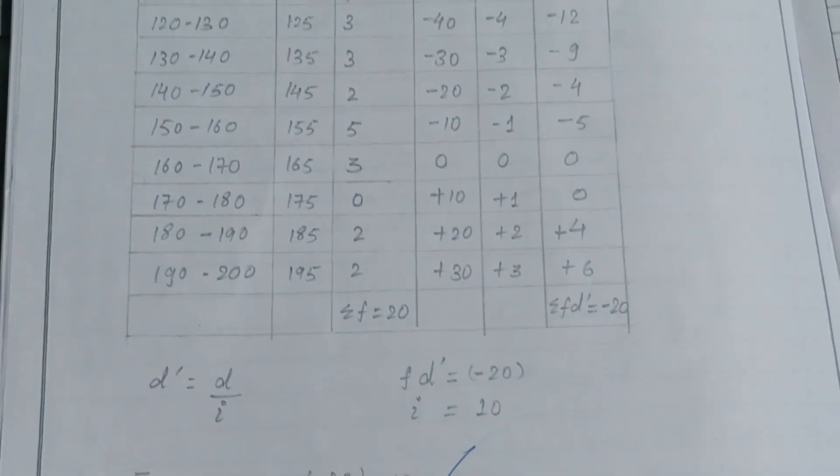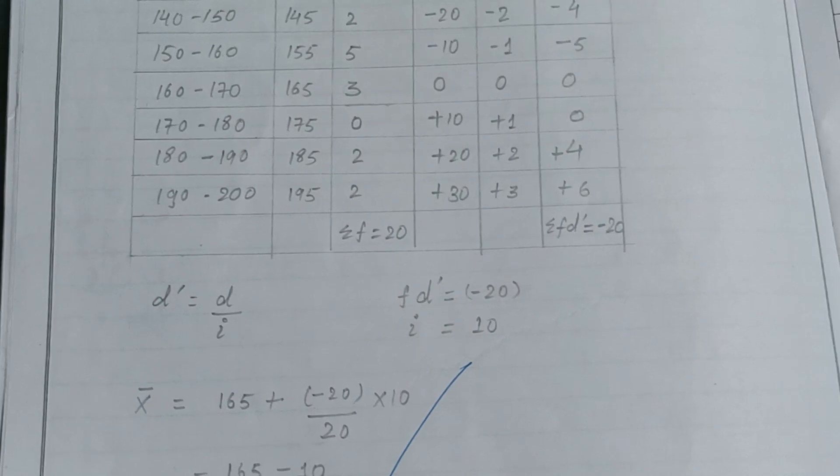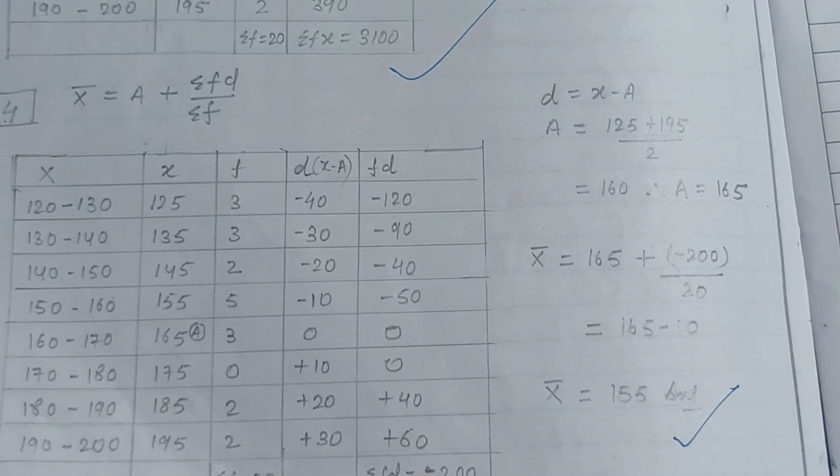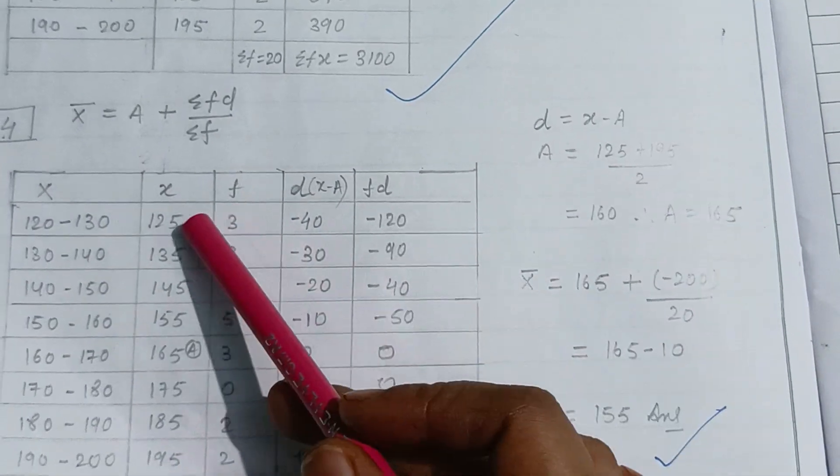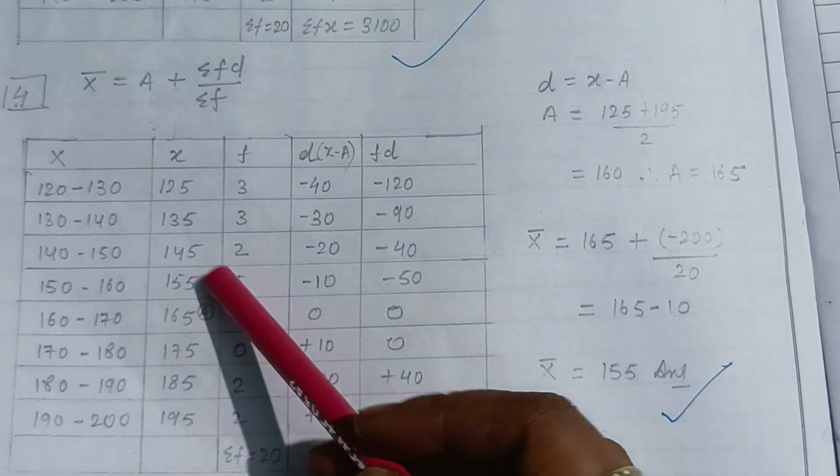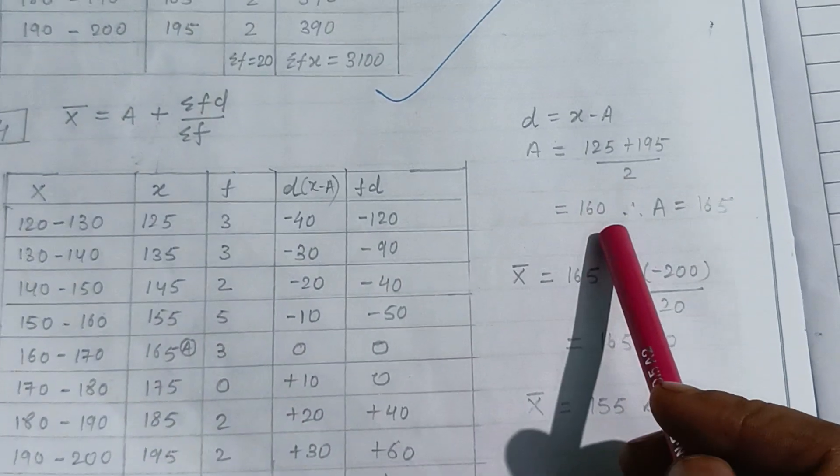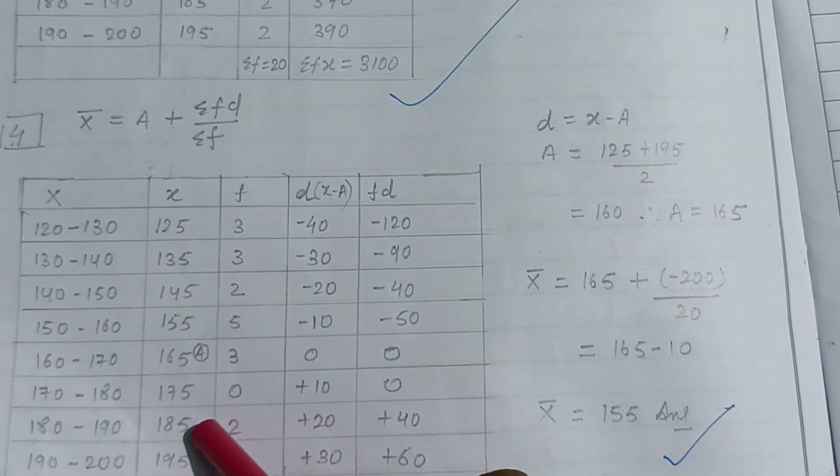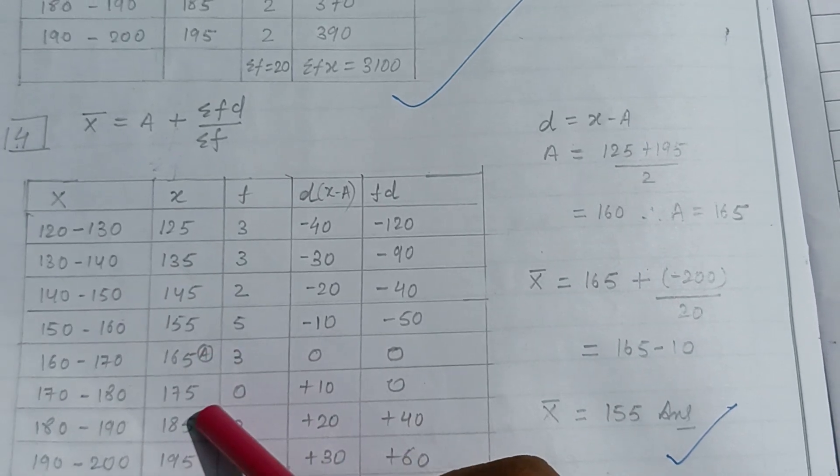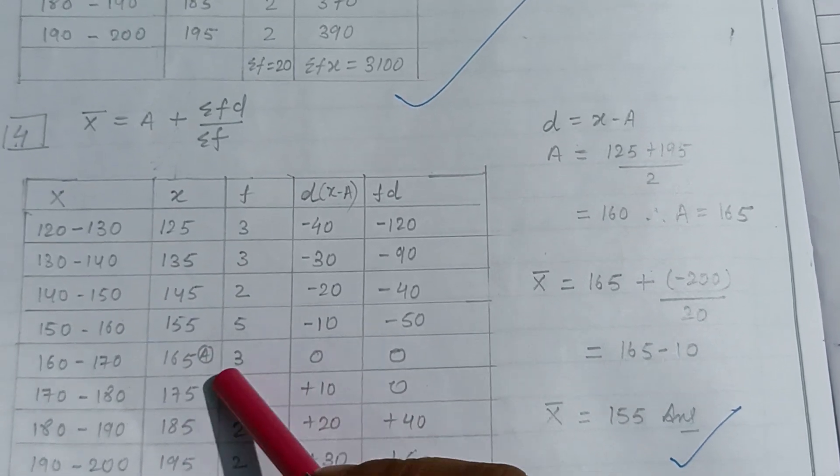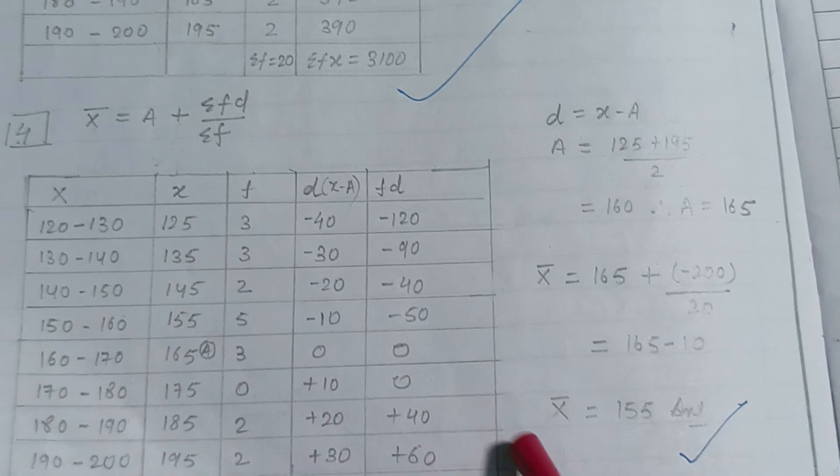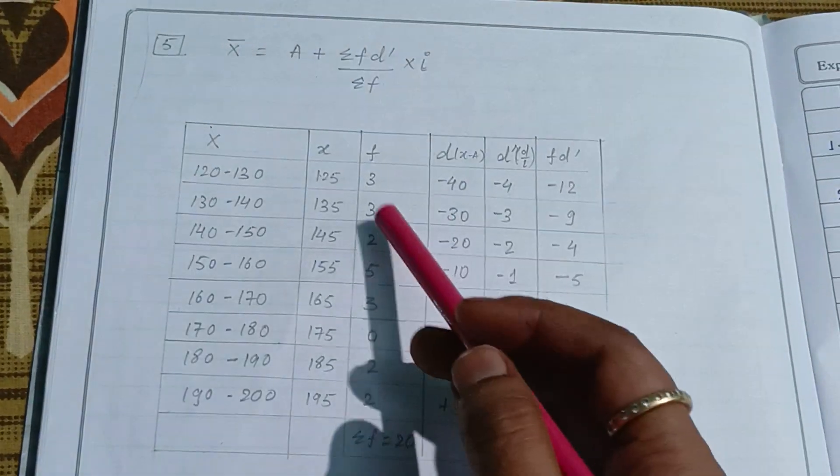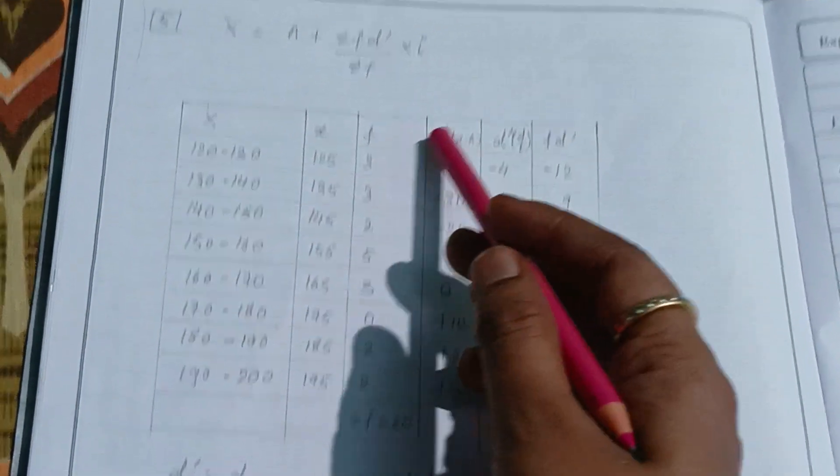Assumed mean can be calculated in the previous formula. Here, 125 plus 195 divided by 2 is about 160, and we can take 165 as well as 175. In this we are taking 165 as assumed mean. So here A plus Sigma F D dash divided by Sigma F times I.